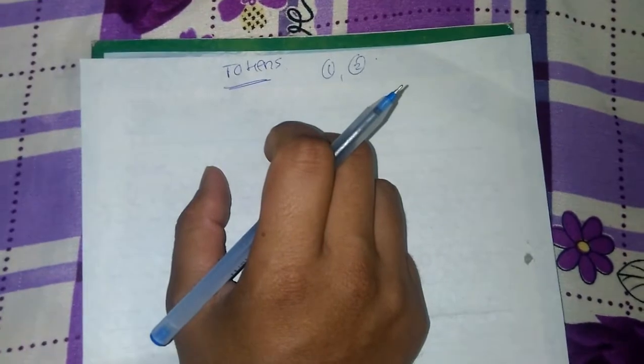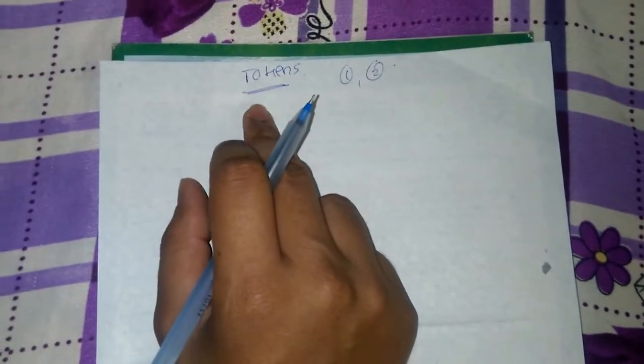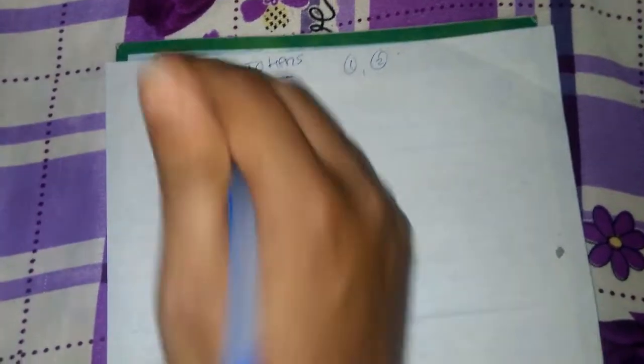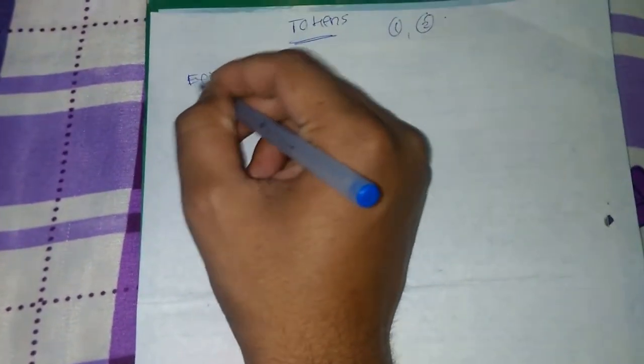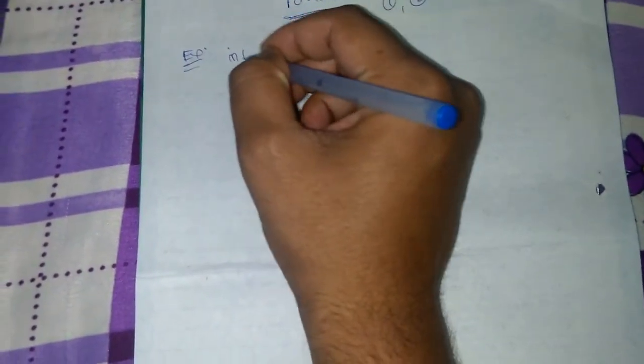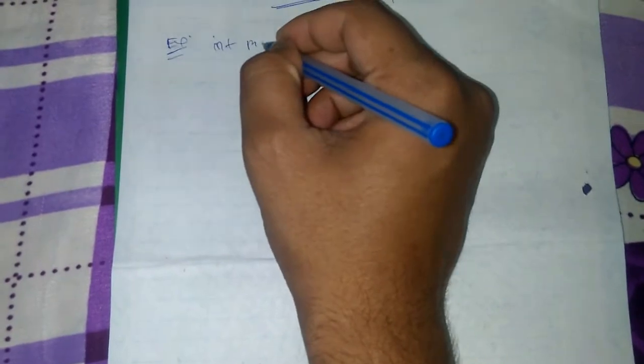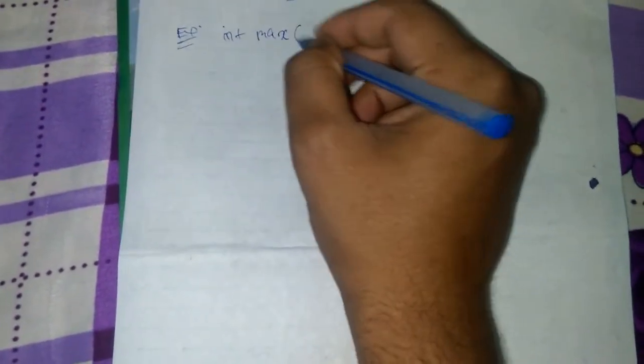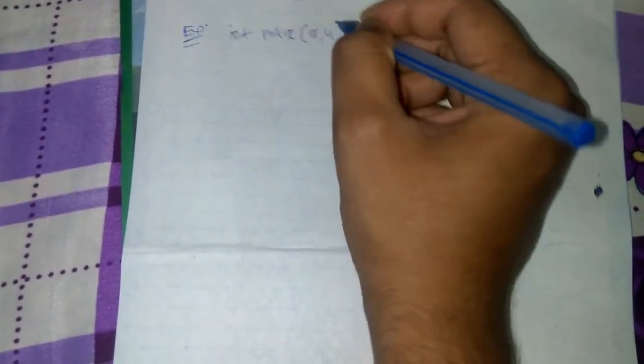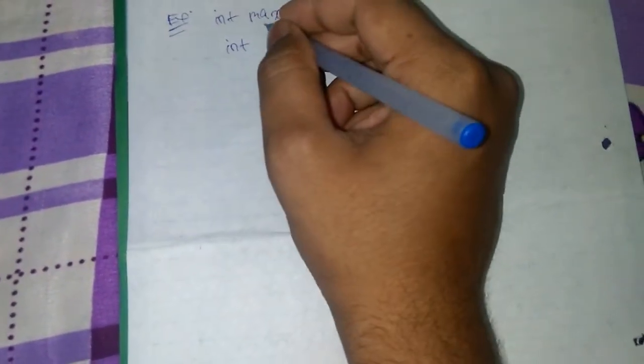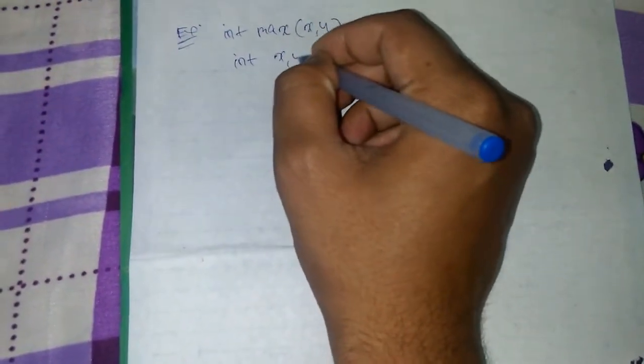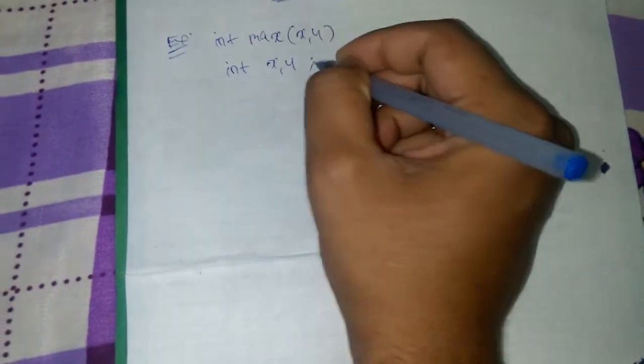We will take the first example. If the example contains int max, then it contains the function name xy, and again int x comma y semicolon, then return the condition x is greater than y question mark x colon y, and again the braces.